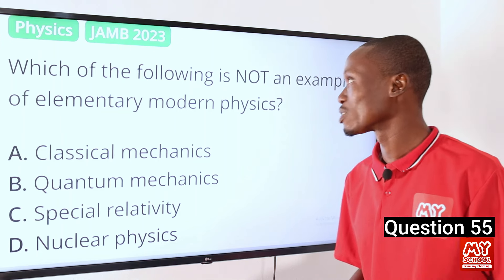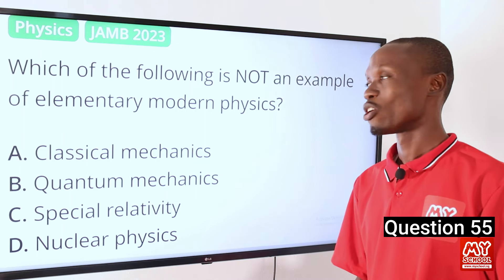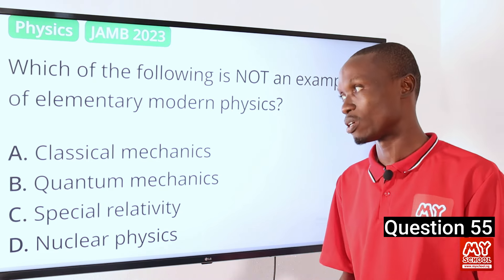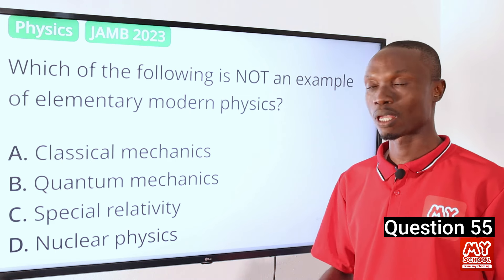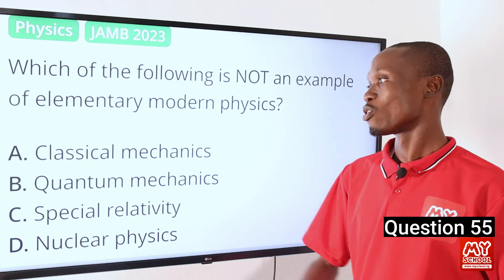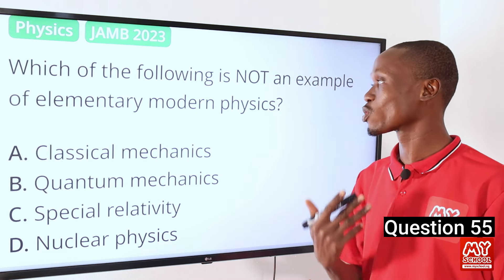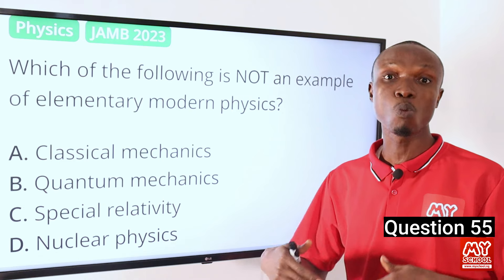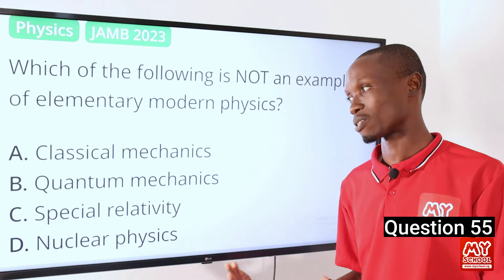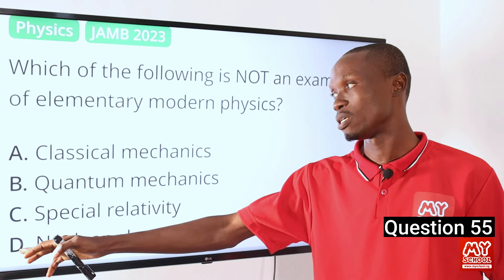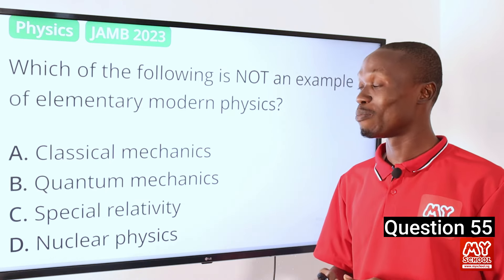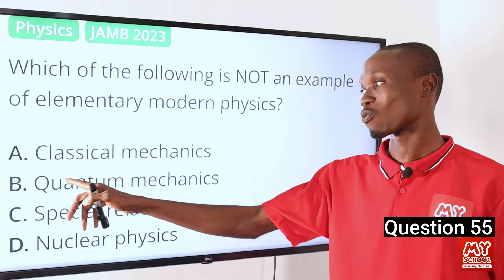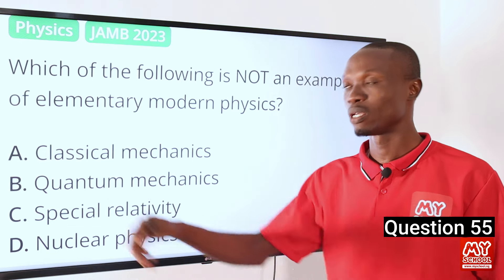Question 55. Which of the following is NOT an example of elementary modern physics? Elementary modern physics is based on two major discoveries of the 20th century: relativity and quantum mechanics. Option A, classical physics, is not an example of elementary modern physics because it deals with the motion of macroscopic objects. Options B, C, and D — including nuclear physics — are examples of elementary modern physics, as nuclear physics deals with the nucleus of an atom, which is part of quantum mechanics. So option A is the correct answer.